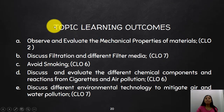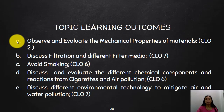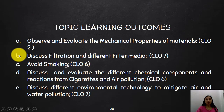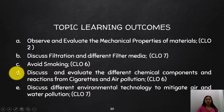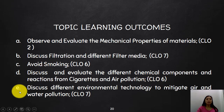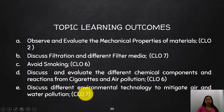After the final term, these are the topic learning outcomes you should achieve. Letter A, observe and evaluate the mechanical properties of materials in relationship with CLO number two. Letter B, discuss filtration and different filter media in relation to CLO number seven. Letter C, avoid smoking in relation to CLO number six. Letter D, discuss and evaluate the different chemical components and reactions from cigarettes and air pollution, also in relation to CLO number six. Finally, discuss different environmental technology to mitigate air and water pollution in relation to CLO number seven.